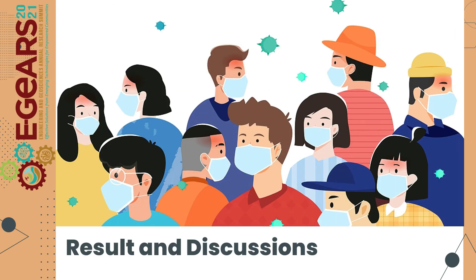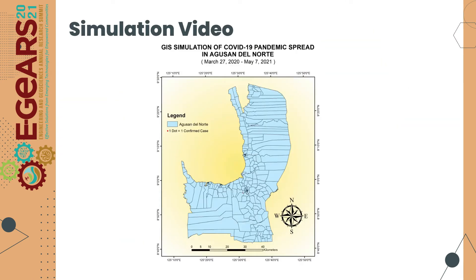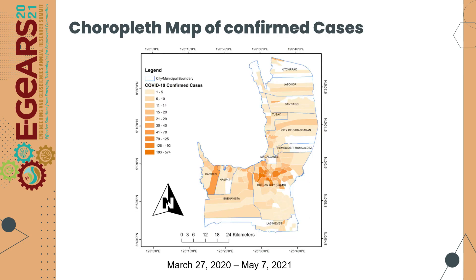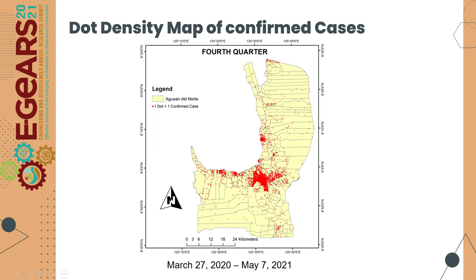Results and Discussion. This is the simulation video of COVID-19 pandemic spread in Agusan del Norte from March 27, 2020 to May 7, 2021. This is the choropleth map of confirmed cases in every barangay in Agusan del Norte, and this is the dot density map of COVID-19 confirmed cases.